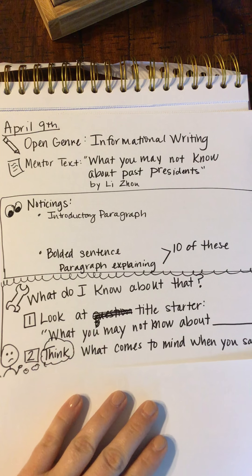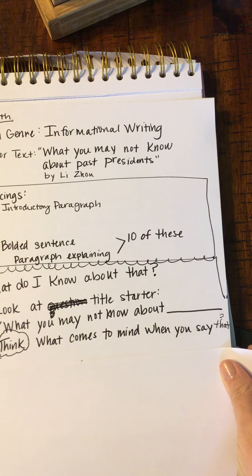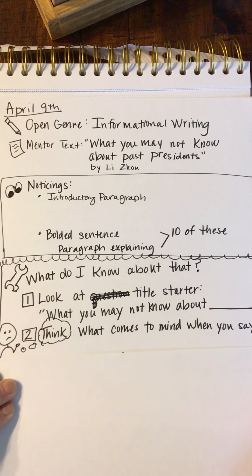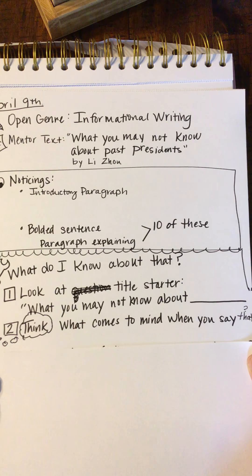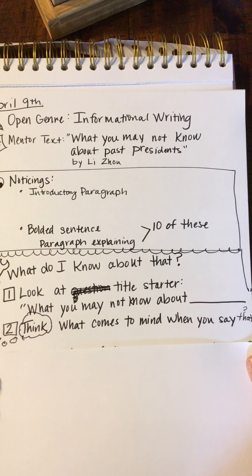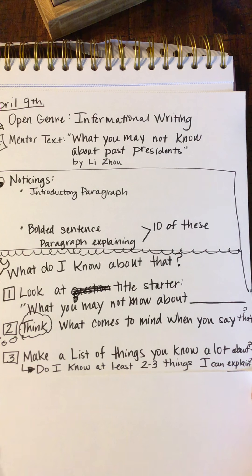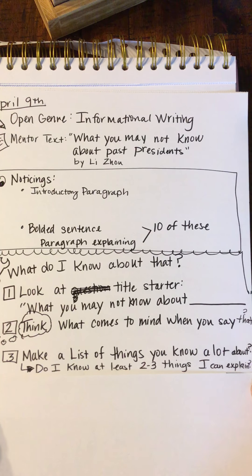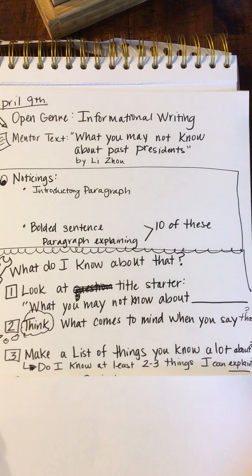Step two: think about what comes to mind when you say that topic. So if I say 'what you may not know about living in Kansas City' and I can't really think of a lot, then I probably need to come up with another item on my list. Step three: make a list of things you know a lot about, and then ask — do I know at least two to three things that I can explain? I'll show you what I mean in just a moment.